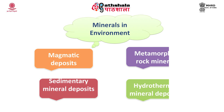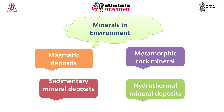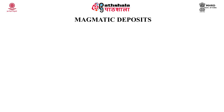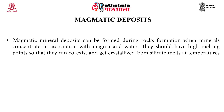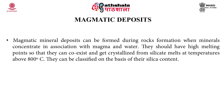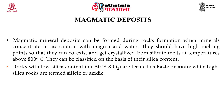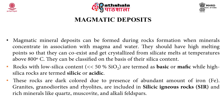Now let's see the minerals present in the environment. They can be magmatic deposits, metamorphic rock minerals, sedimentary mineral deposits, and hydrothermal mineral deposits. Magmatic deposits can be formed during rock formation when minerals concentrate in association with magma and water. They should have a high melting point so that they can co-exist and get crystallized from silicate melts at temperatures above 800 degrees Celsius. They can be classified on the basis of their silica content. Rocks with low silica content, less than 50% silicate, are termed basic or mafic, while high silica rocks are termed silicic or acidic. These rocks are dark coloured due to the presence of abundant iron. Granites, granodiorites and rhyolites are included in silicic igneous rocks and contain rich minerals like quartz, muscovite and alkali feldspar.